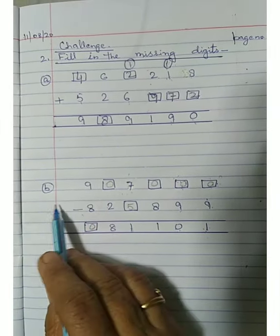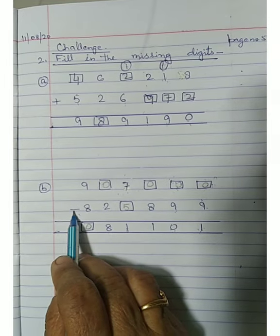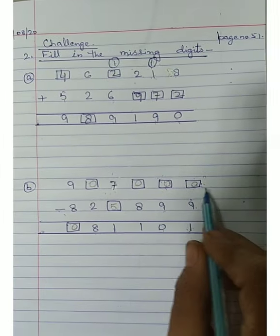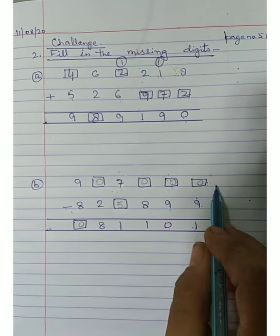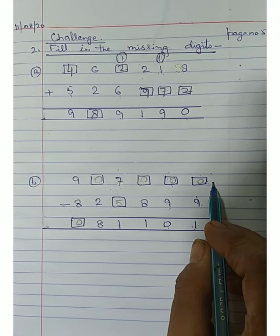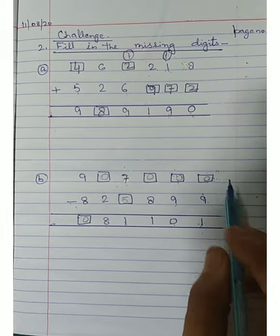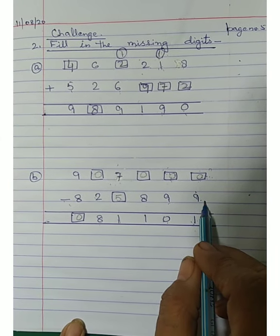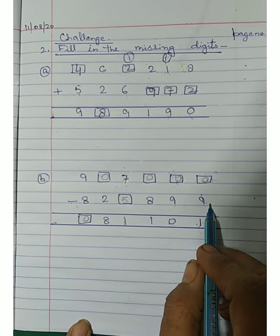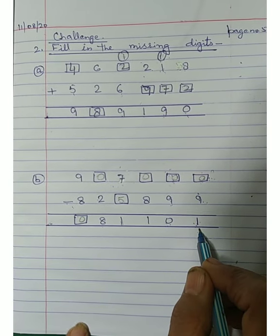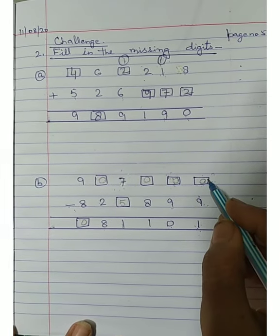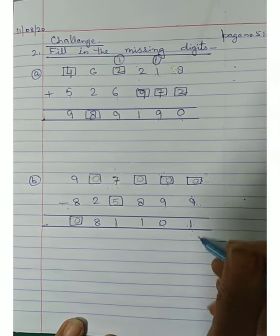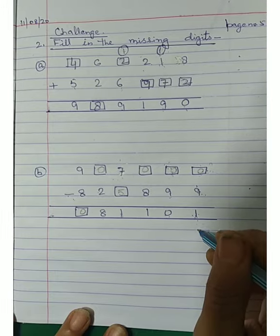Next we take the second problem — that is on subtraction. Subtraction में मैंने आपको पहले भी बताया है कि ऊपर का जो number होता है — जिसमें से minus किया जाता है — उसको बोलते हैं minuend। और जो smaller number होता है इसको बोलते हैं subtrahend। और answer जो होता है वो difference होता है। अगर हमारा ऊपर वाला number missing है तो हम subtrahend और difference को plus कर लेंगे।